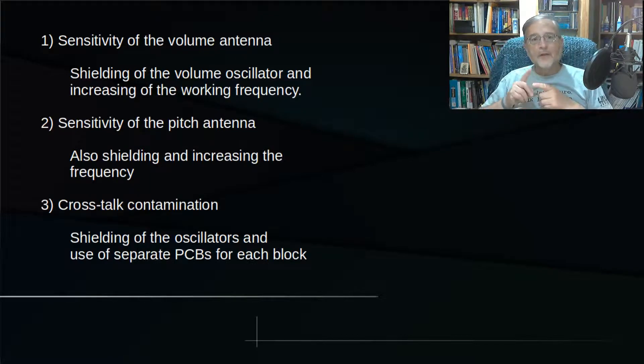By the way, talking about shielding, this should cancel almost completely the crosstalk between the pitch and the volume oscillators, eliminating the third issue we talked about. Also, the usage of a PCB for each of these circuits will help preventing crosstalk among the elements of the Theremin, eliminating all the cable crossings that I had to do on the perf board version 1.